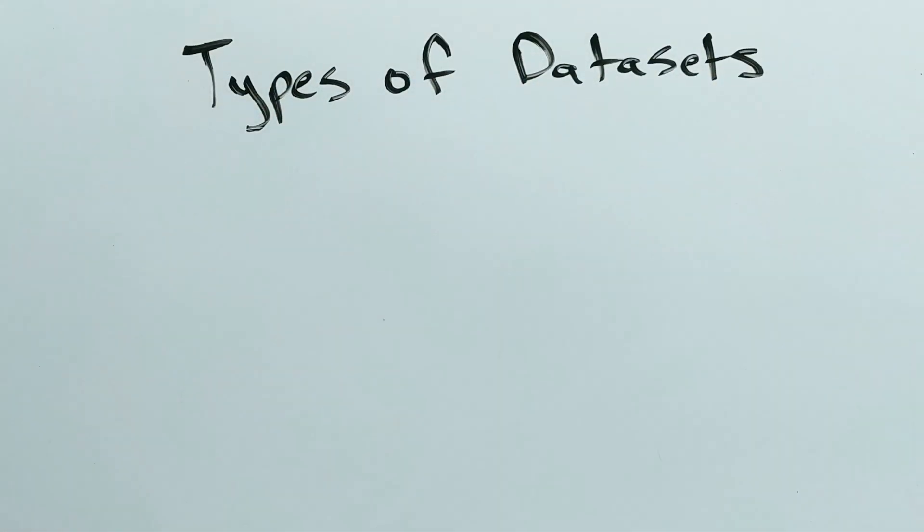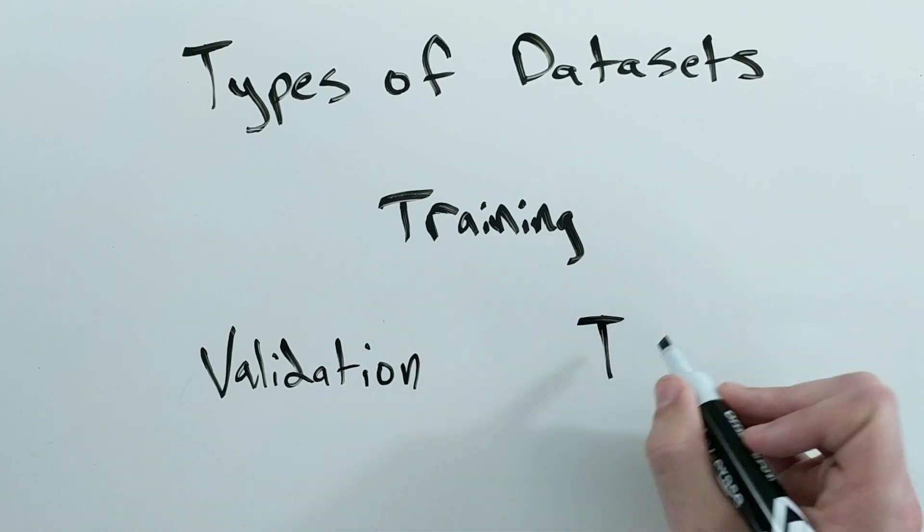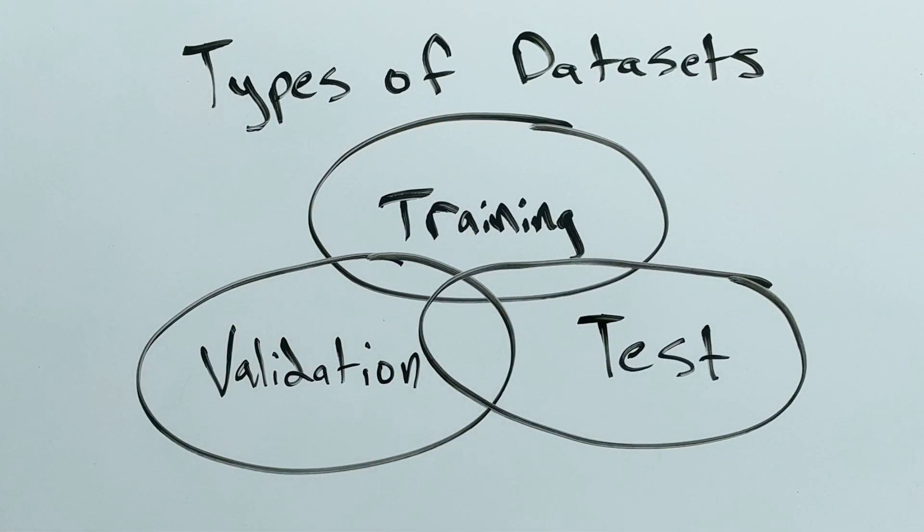There are three types of datasets used for discovering the best model: the training set, the validation set, and the test set. What is the difference? Why do we use three different datasets?